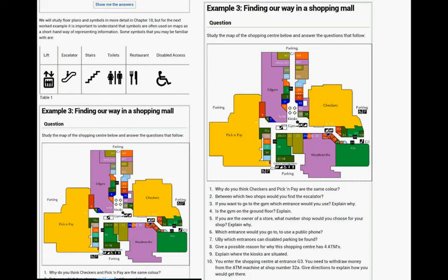But for the next work example, it's important to understand that symbols are often used on maps as a shorthand way of representing information. Some symbols you may be familiar with are lifts, escalators, stairs, toilets, restaurants, and disabled access. So study the map of the shopping center and answer the questions. This is the shopping center.